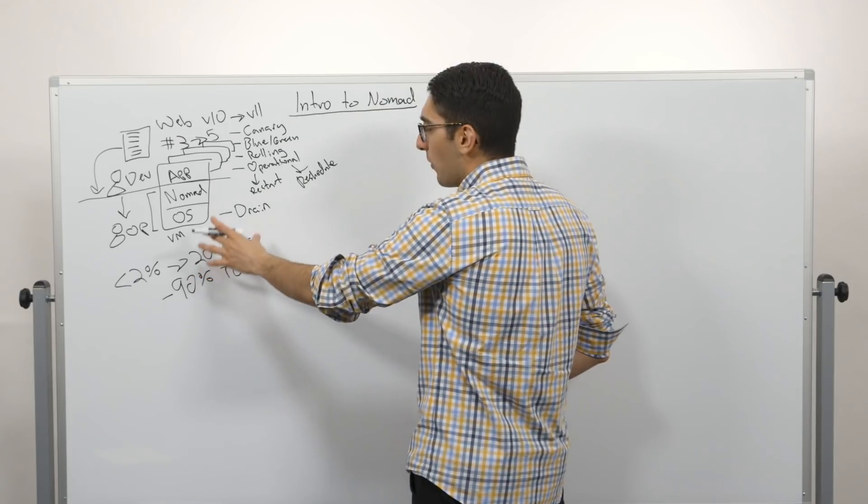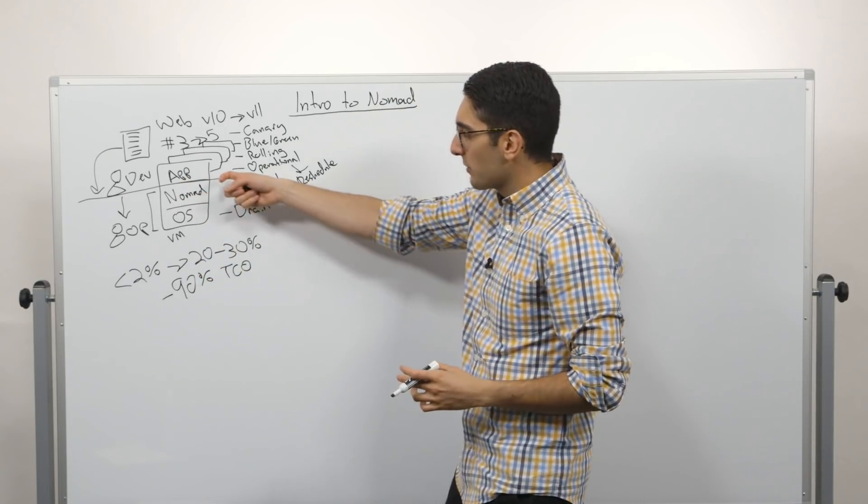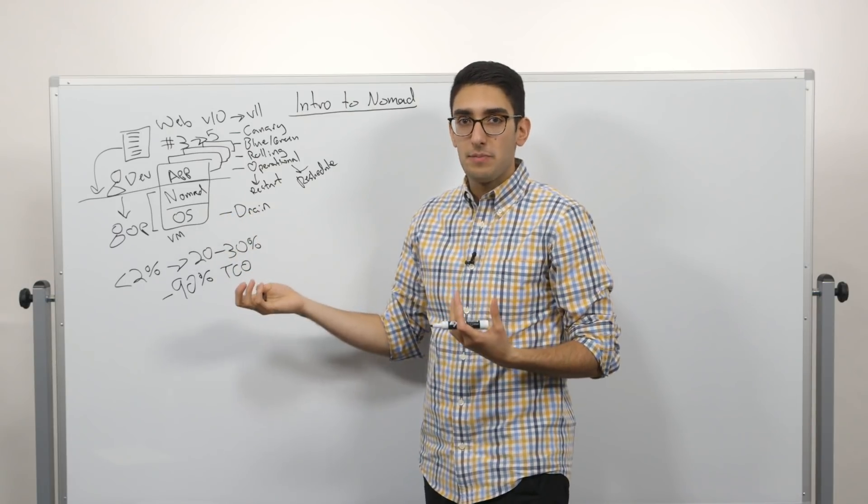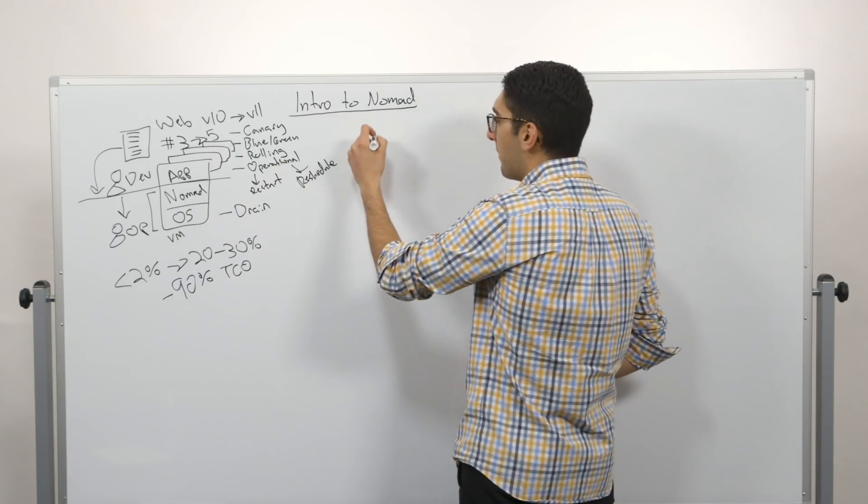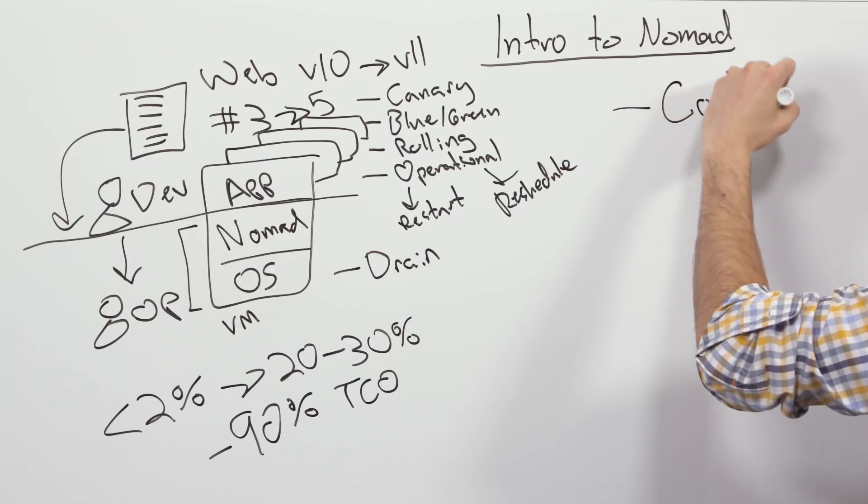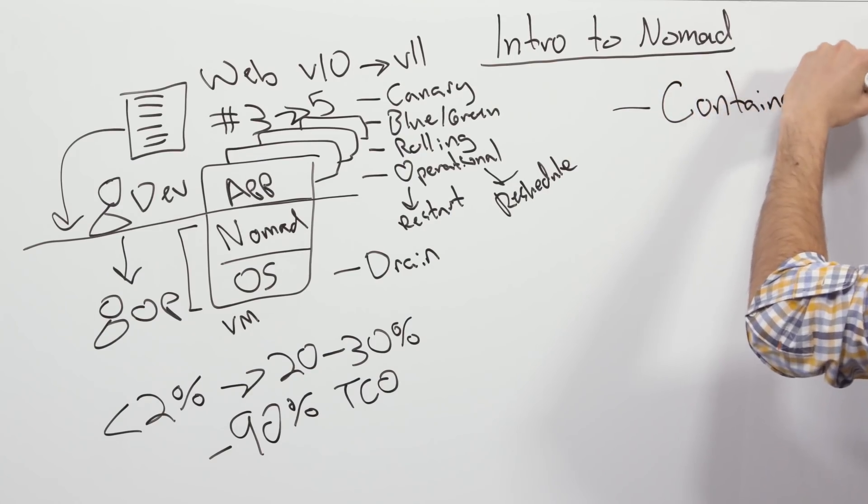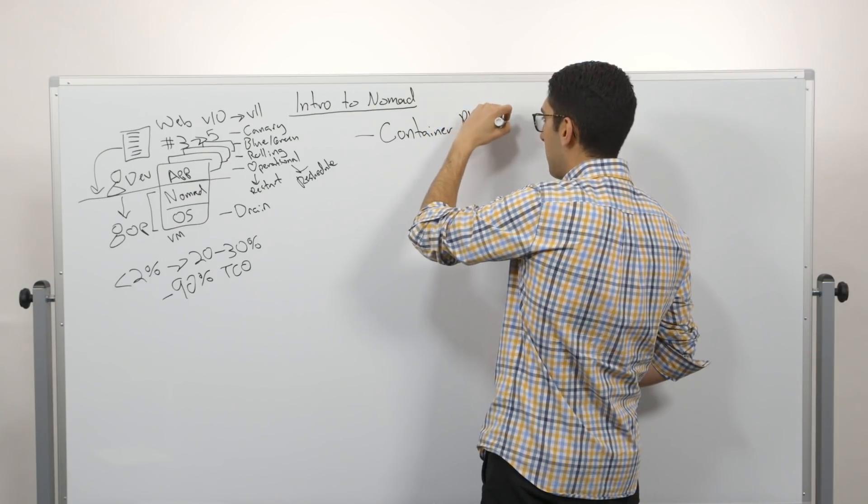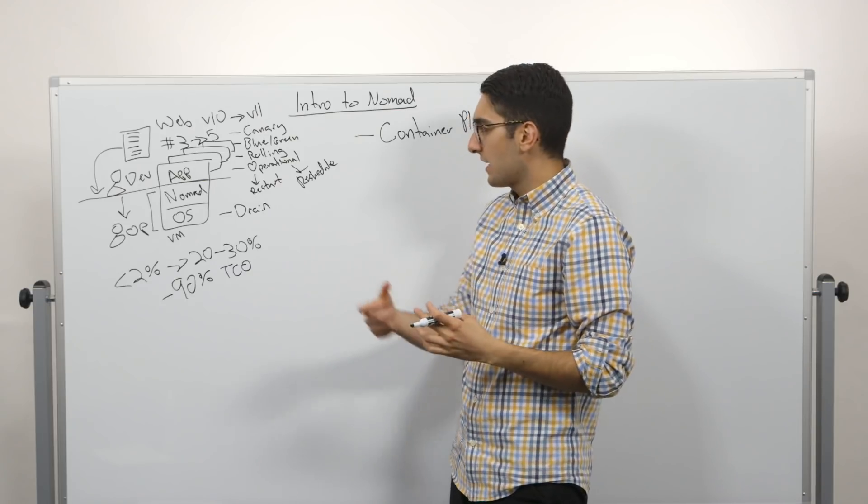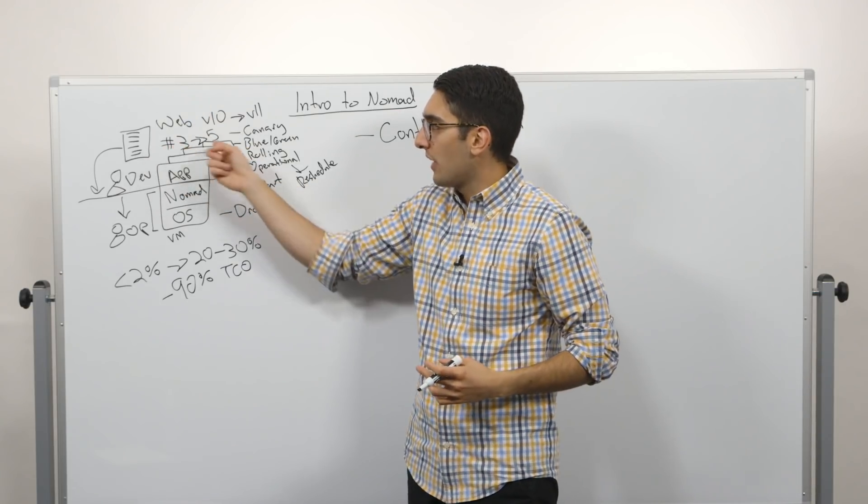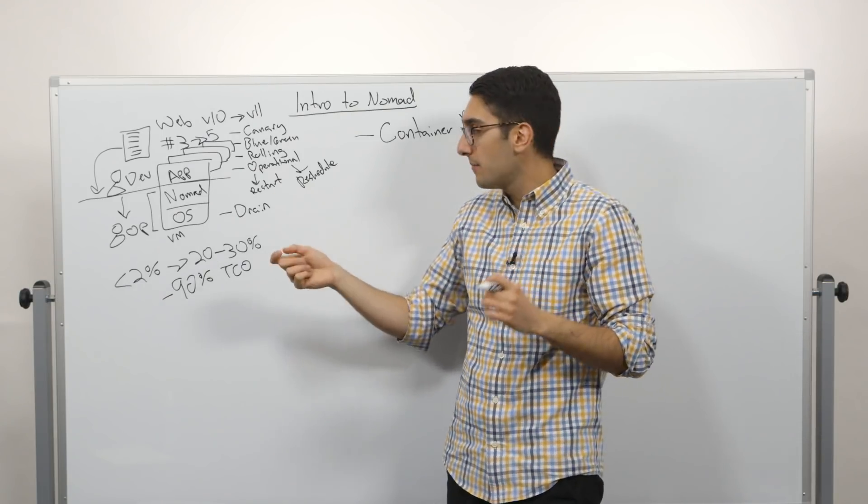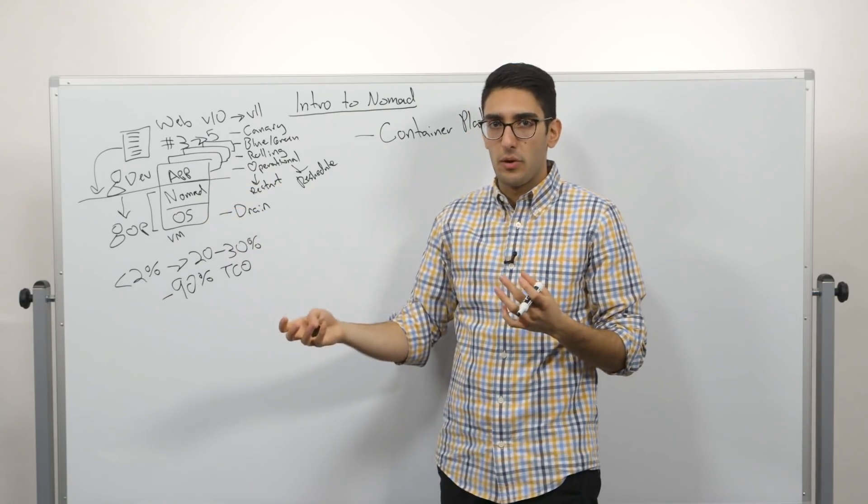And so then what we haven't really mentioned is here we're talking generically about an application running on a machine. And this really comes back to how flexible Nomad is. So on one side, a major use case for Nomad is acting as a container platform. So this application that we're deploying might be packaged as a Docker container. So we package our application on a Docker container, specify as part of our job file that our web server is using this container, let's say web-v10, and then we hand that to Nomad to do the deploy.